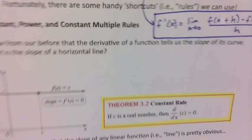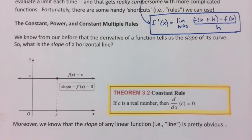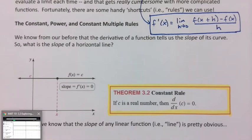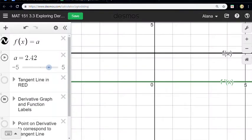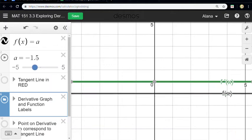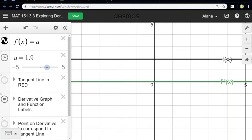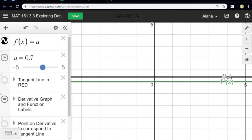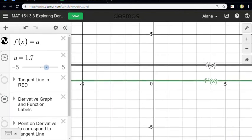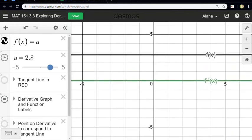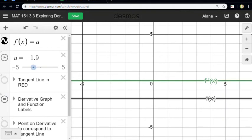So the first of these rules is rather obvious. It's the constant rule. Namely, if you have a horizontal line, which is what a constant function looks like, then the derivative will always be zero. And it doesn't matter where I put that constant line, I can put it up, down, wherever, it's going to be zero for the slope. You'll notice that that green line never changed, and that's the derivative graph according to Desmos. So wherever I put this, the derivative is zero.